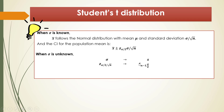The student t distribution is just like an approximation of the standard normal distribution. The confidence interval will become x-bar plus or minus t_{n-1, α/2} times s over square root of n. Here, s over square root of n is the standard error for the case when the standard deviation is unknown, and t_{n-1, α/2} is the critical value instead of using z_{α/2}.